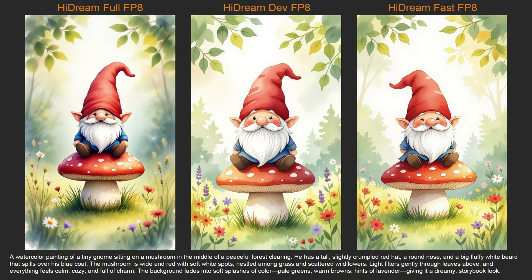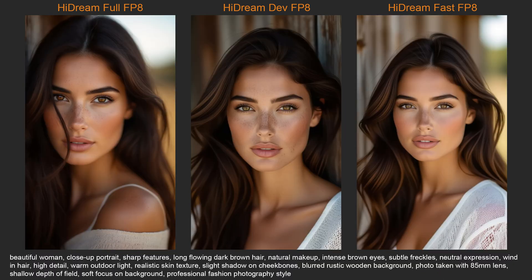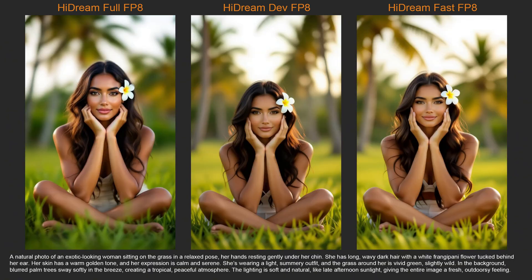For art styles, it seems to know all kinds of art styles, but with the full version, it tries to add an extra bit of realism, even when I ask for a watercolor painting. For this surreal fantasy scene, it understood the prompt well, but again, the full version has the most realism. The flowers in the fast version look more like an illustration than real flowers. It also added some random text at the bottom that I didn't ask for. For the portrait of the woman, the full version generates the most realistic images, while the fast version has a more plastic look. The same goes for the woman in the grass. It added everything I asked in the prompt, but when it comes to hands and feet, HiDream is usually not as good as the Flux model.